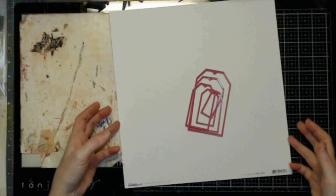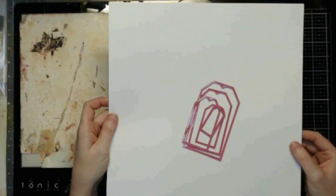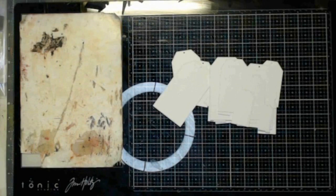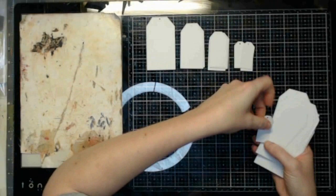To start, I am going to take my paper and dies over and start getting some tags made up. All of these tags are what I was able to get out of just a single sheet of the white cardstock.